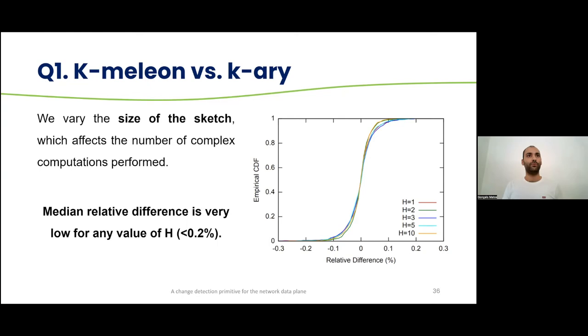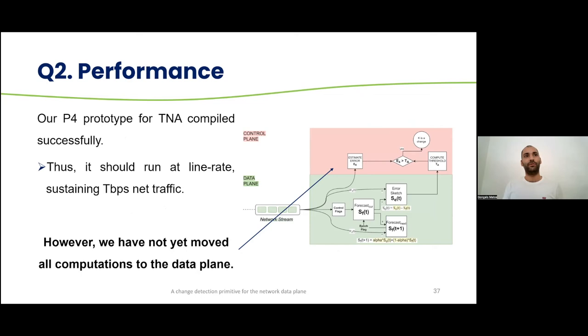So the first question was about comparing Chameleon against the K-Area. So we varied the size of the sketch, in this case the height of the sketch, which affects the number of complex computations performed. And as we can see, the median relative difference is very low for any value of this height, because it's always less than 0.2%. Our P4 prototype for the Tofino native architecture compiled successfully, and this gives us some guarantees that it can run at line rate, sustaining terabit per second performance and network traffic.